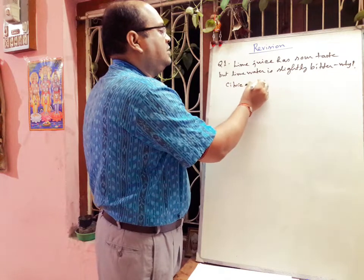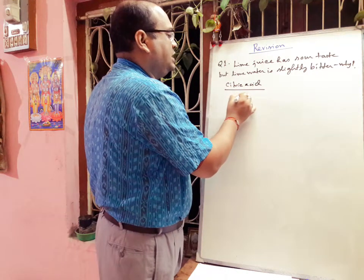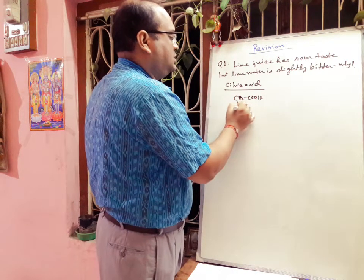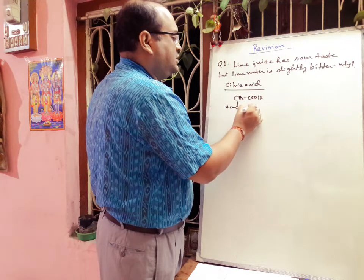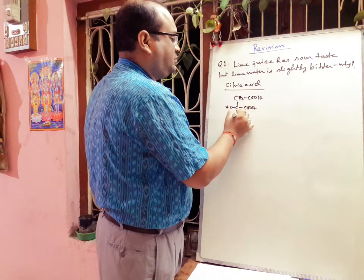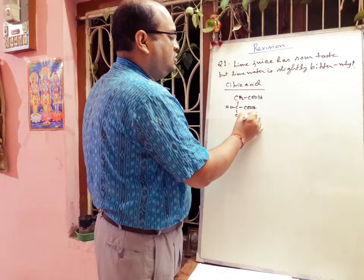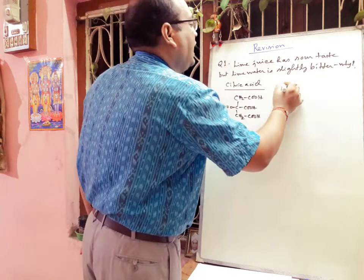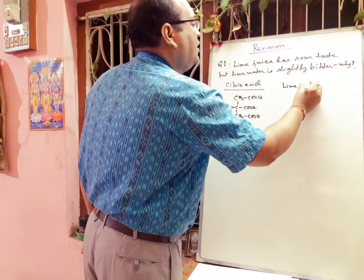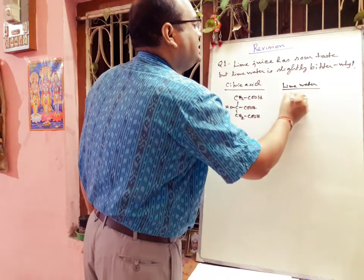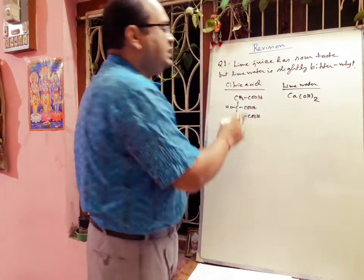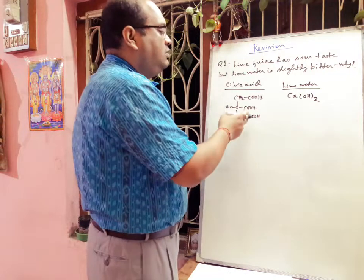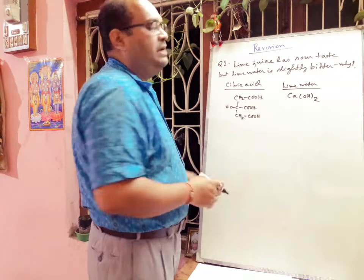Lime water, on the other hand, is nothing but a base — calcium hydroxide Ca(OH)₂. All bases are generally slightly bitter in taste, so lime water is slightly bitter. Here I am writing the structure of citric acid, which is a tricarboxylic acid. This confirms: citric acid is sour, calcium hydroxide is bitter.